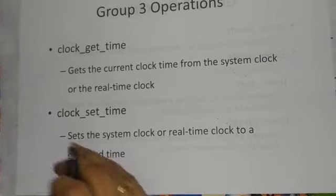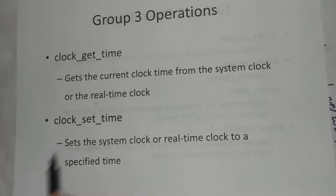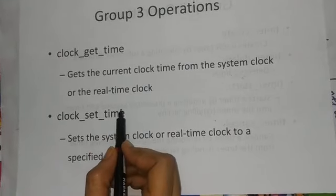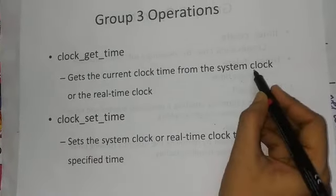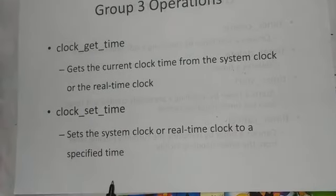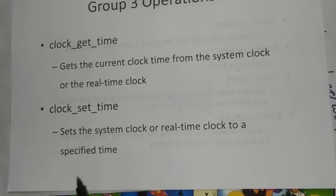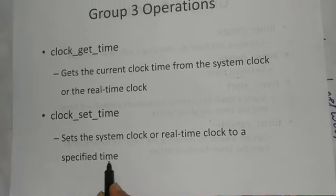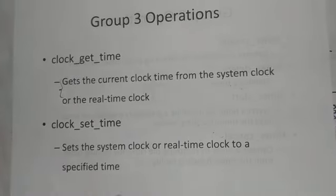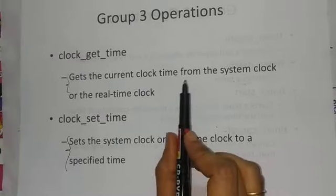Group 3 operations are get time and set time. Get time displays the current value based on either the system clock or real-time clock. Set time sets the system clock and real-time clock to a specified time, displaying from the original value up to the present set value.